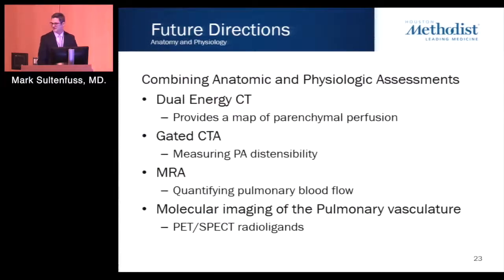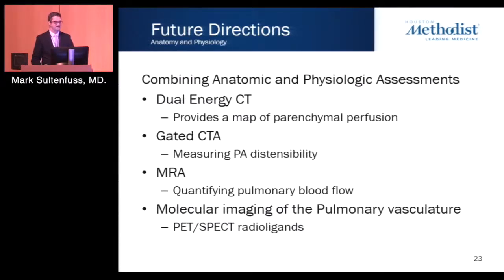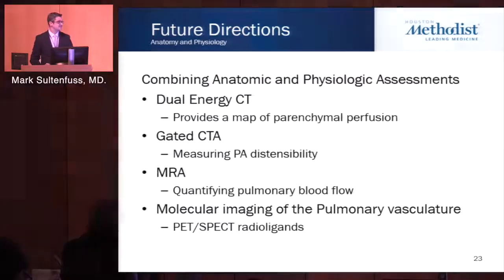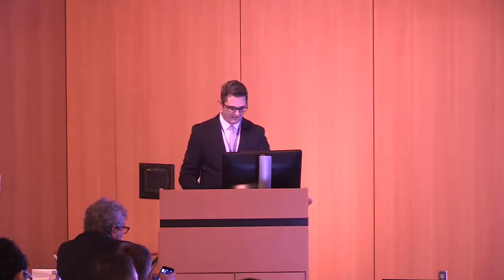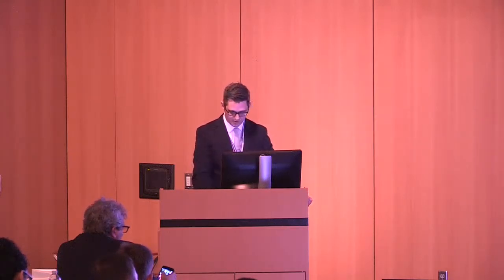Future directions from an anatomic and physiologic perspective include dual energy CT, which uses two different X-ray attenuations to provide perfusion maps of the lung; gated CTA to assess pulmonary artery distensibility and correlate with pulmonary artery pressure; MR and MRA; and molecular imaging of the pulmonary vasculature using PET or SPECT CT radioligands to evaluate pulmonary vascular remodeling in acute and chronic pulmonary thromboembolism.